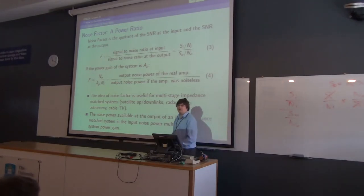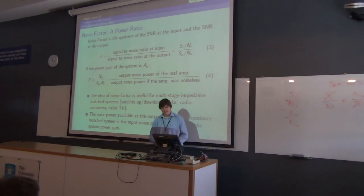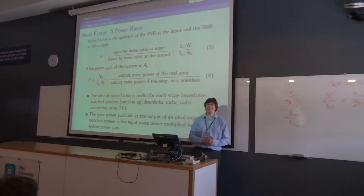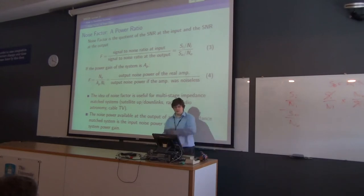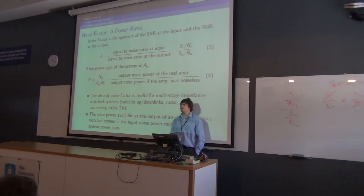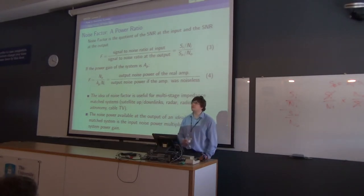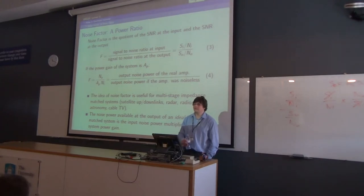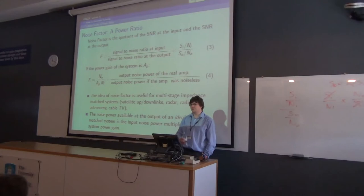Cable TV impedance is 75 ohms for Virgin, Sky, and all that. For a regular matched system the usual impedance is 50 ohms — and you could have worked that out even if you've never been lectured on it, because if you look at the data sheets given out at the start of the lecture it says 50 ohms at the top.